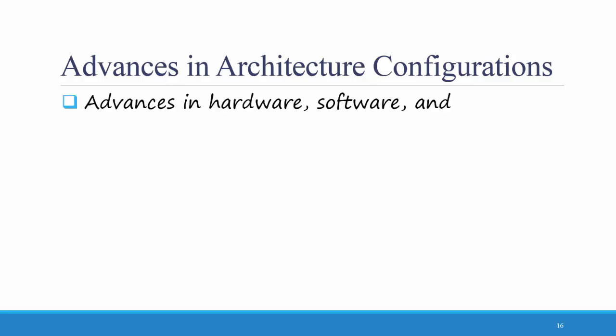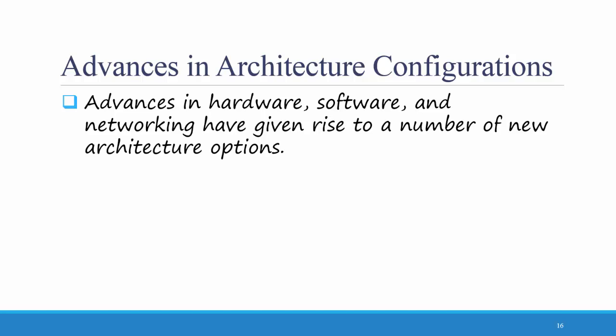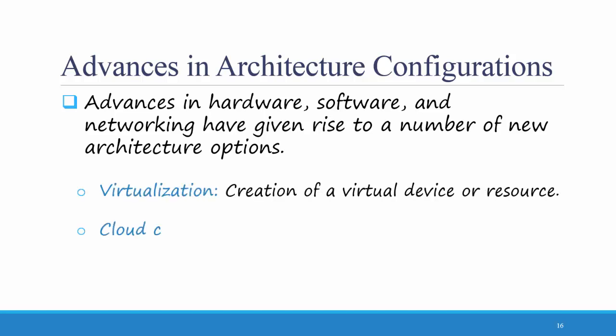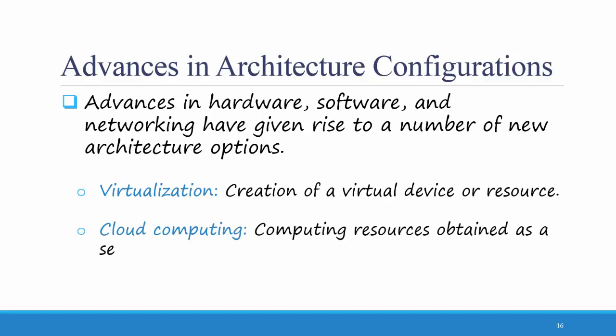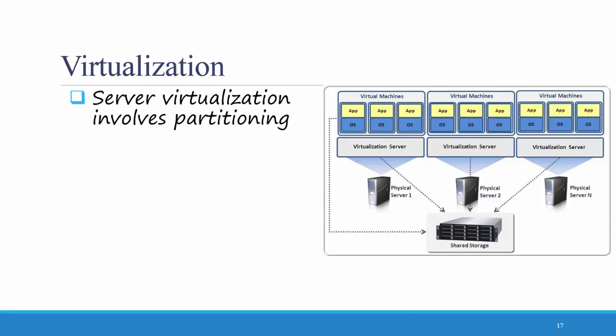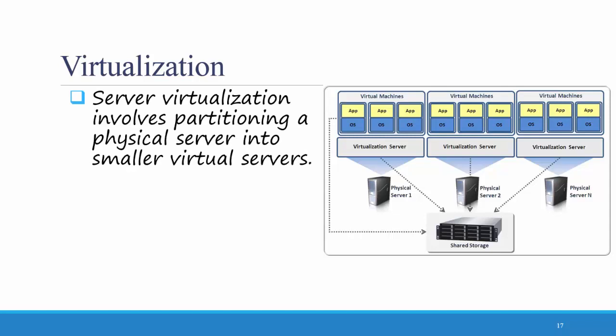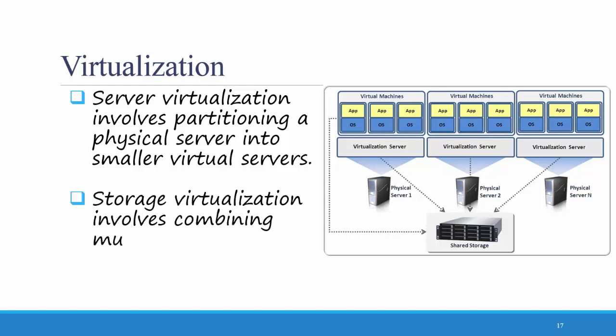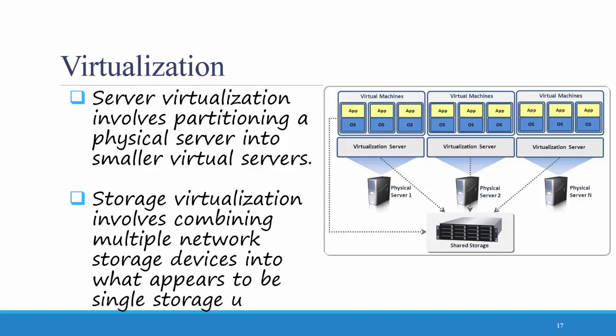Advances in hardware, software, and networking have given rise to a number of new architecture options, including virtualization — the creation of a virtual device or resource — and cloud computing, which is computing resources obtained as a service. Server virtualization involves partitioning a physical server into smaller virtual servers. You might only have one physical computer server running several virtual machines with different types of operating systems. You can also have storage virtualization, which involves combining multiple network storage devices into what appears to be a single storage unit.